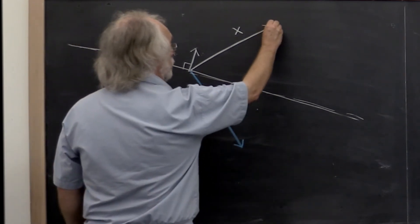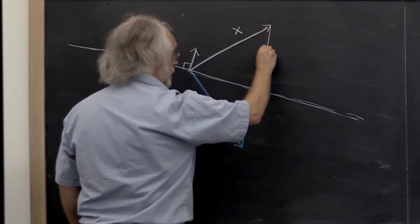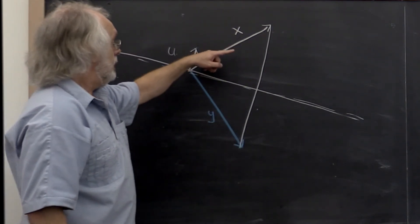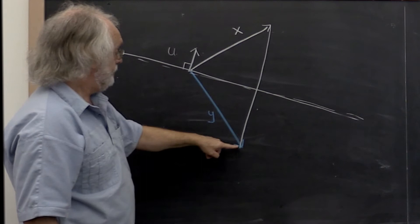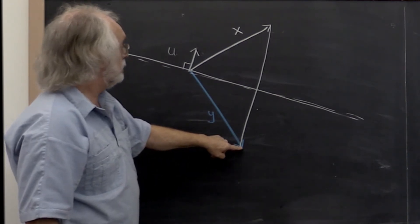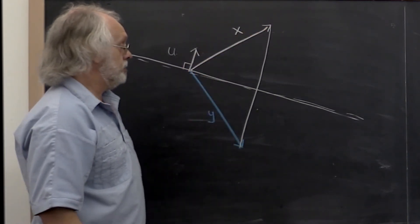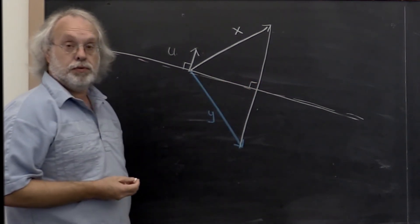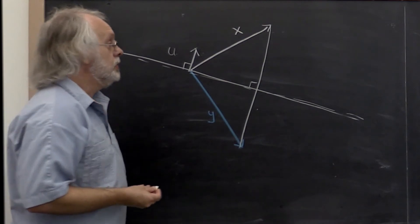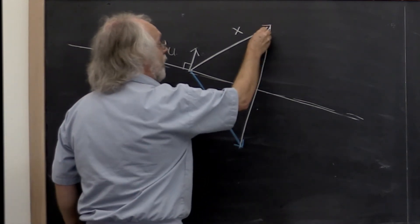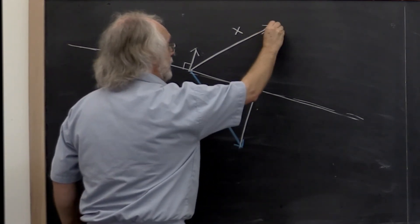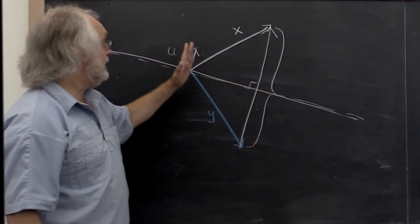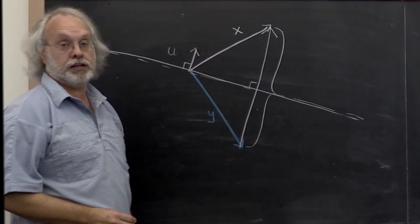Well notice that if you draw a line between the end of vector y and the end of vector x, then the way mirrors work, this is supposed to be perpendicular. So if we can figure out this vector right here, then we know at least the direction of our vector u.